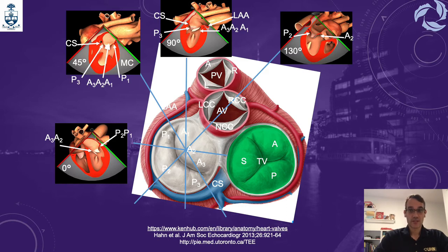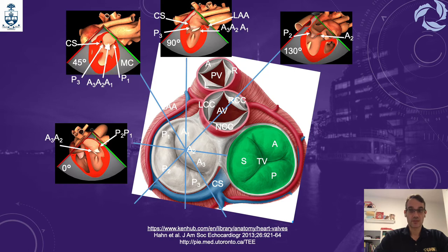When assessing a mitral valve prosthesis using 3D imaging, it is important to understand the anatomical references. This representation is presented from an auricular perspective into the ventricles, showing the different cutting planes to expose the mitral valve during transesophageal echo. Note that for aortic valve prostheses, the 3 and 9 o'clock positions are inverted compared to the mitral valve prosthesis when assessing paravalvular leaks.